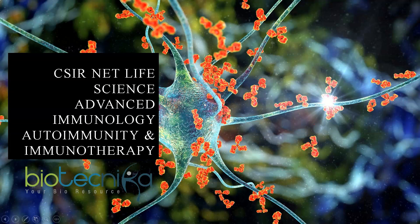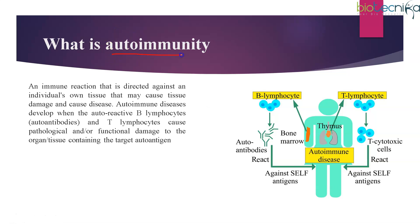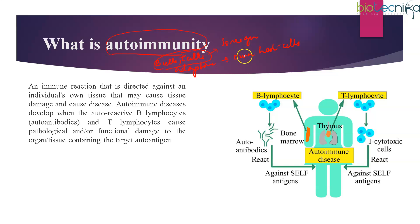Let us start with autoimmunity. The term autoimmunity means that our own B cells and T cells present in our body — which are part of our adaptive immune system — are capable of attacking their own host cells. Usually these cells attack anything that is foreign, but in autoimmunity they attack your own host cells, identifying them as something foreign and mounting an immune response against them. This is an immune reaction directed against an individual's own tissue.